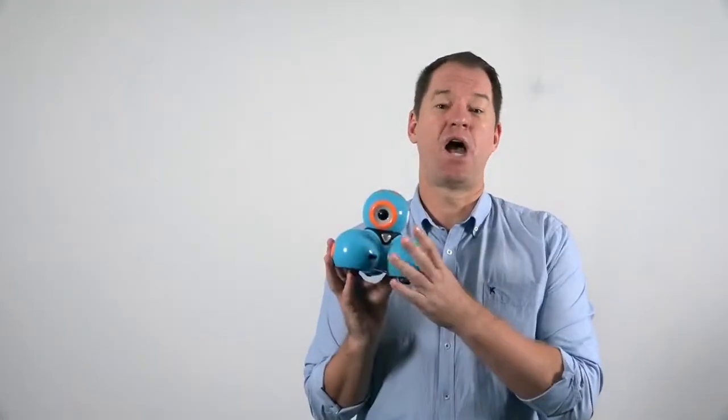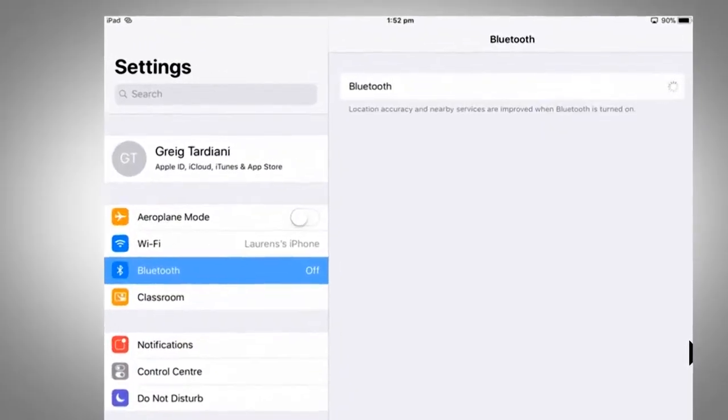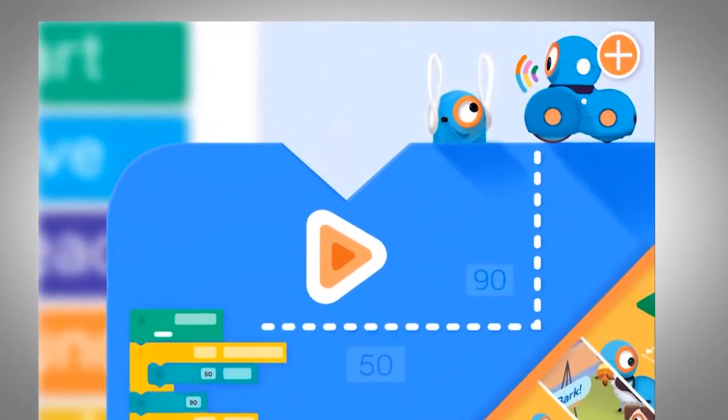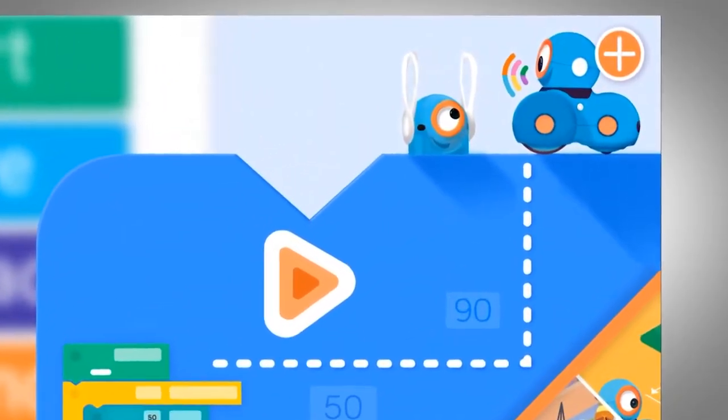Dash connects via an iPad using Bluetooth, so make sure Bluetooth is turned on. Turn Dash on before you turn on the app. Launch the PATH or Blockly app, then click on the plus button.